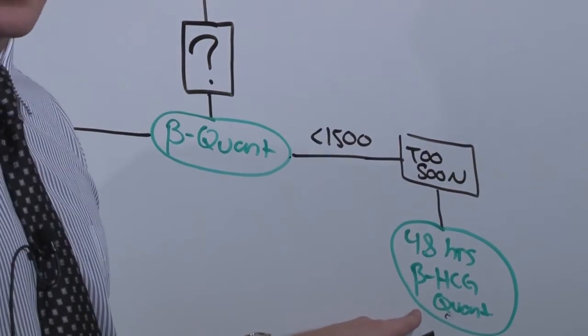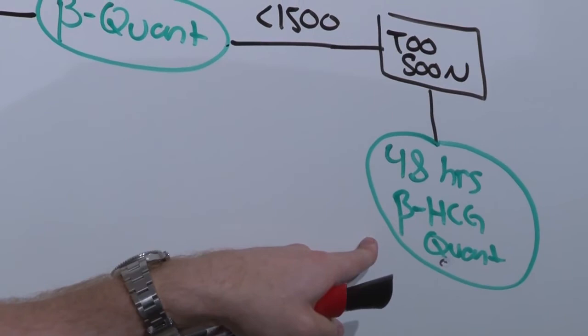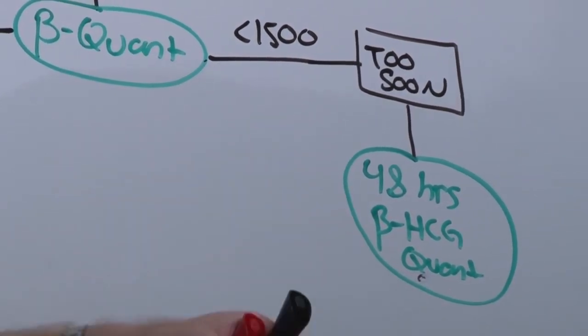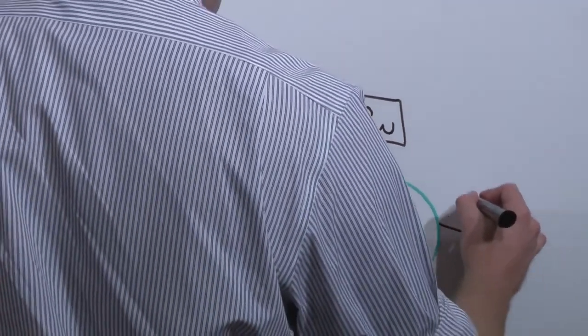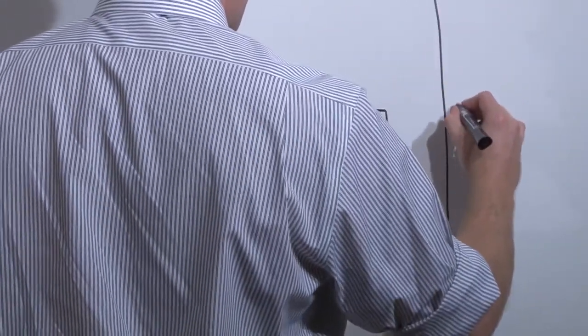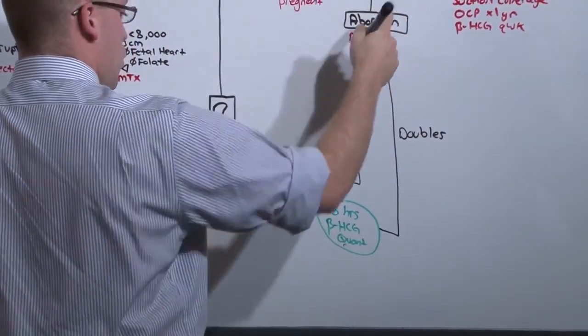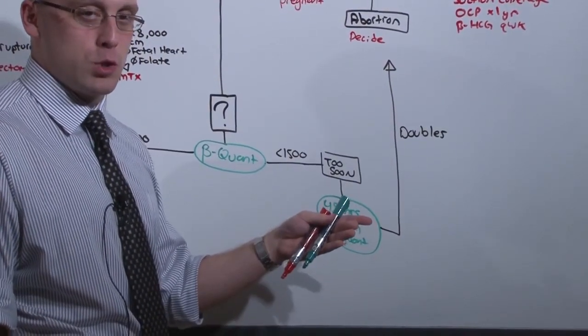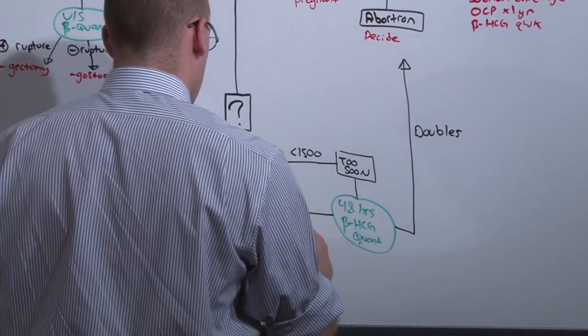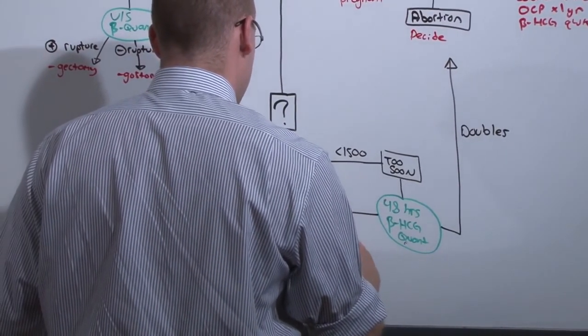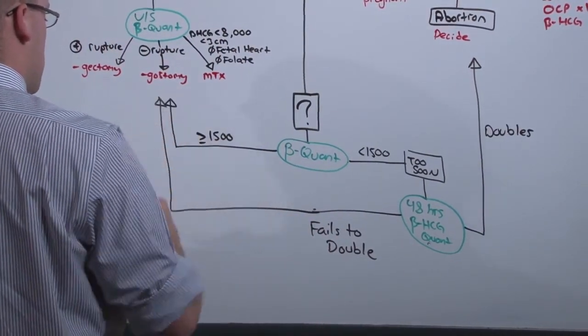And here's the thing. An intrauterine pregnancy will double in size, will double the beta quant in 48 hours. An ectopic will not. Regardless of what the starting number was, if the beta quant doubles, it is an intrauterine pregnancy and is treated as such. Once it reaches 1500, you repeat the ultrasound just to make sure. But if it fails to double, it is not an intrauterine pregnancy. It is assumed to be an ectopic and is treated as such.